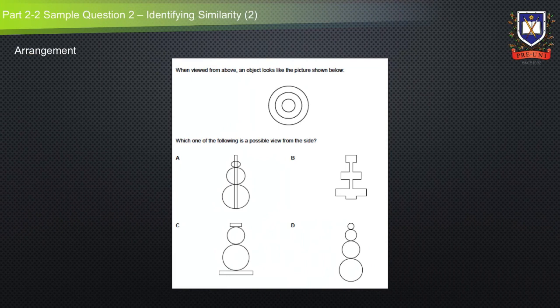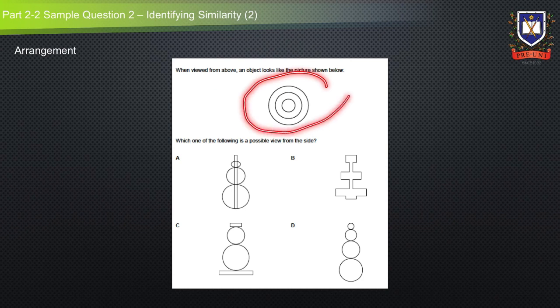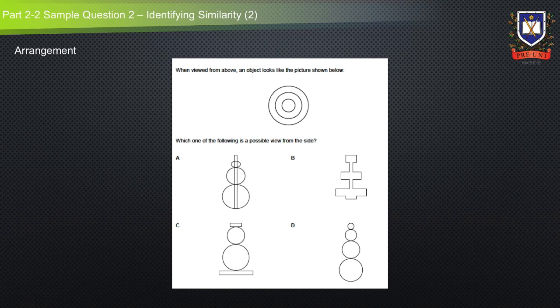Let's continue to look at another example of an arrangement identifying similarity question from the selective thinking skills exam. When viewed from above, an object looks like the picture shown below. Which one of the following is a possible view from the side? This question falls in the identifying similarity category, as it requires students to identify similarities between the given diagram and the possible answer options.